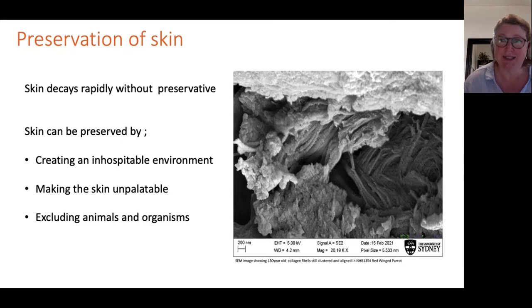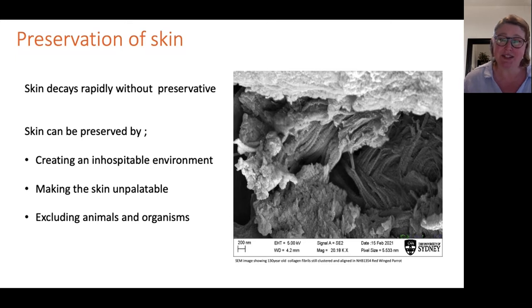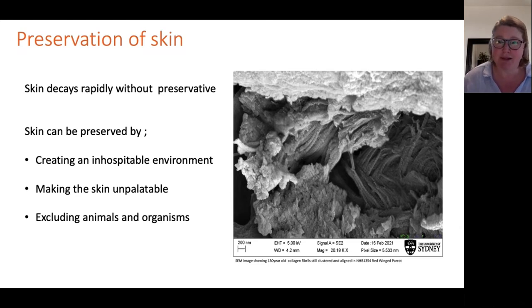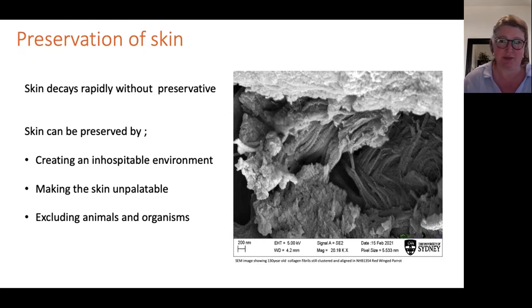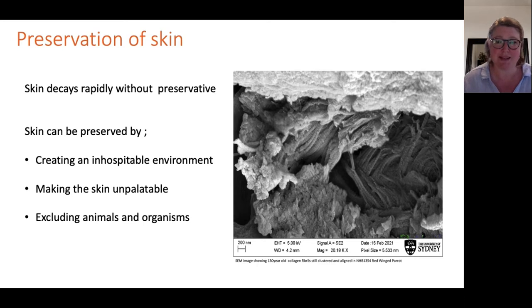Skin rapidly decays without some form of preservation. Cells, enzymes and bacteria typically begin the decomposition process. The time it takes depends on surrounding temperature, humidity and proximity to insects and other animals. To put a timeframe around it: hair can begin to fall from skin within a couple of hours in warm conditions, and a whole body can take up to a year to decay in cooler conditions.